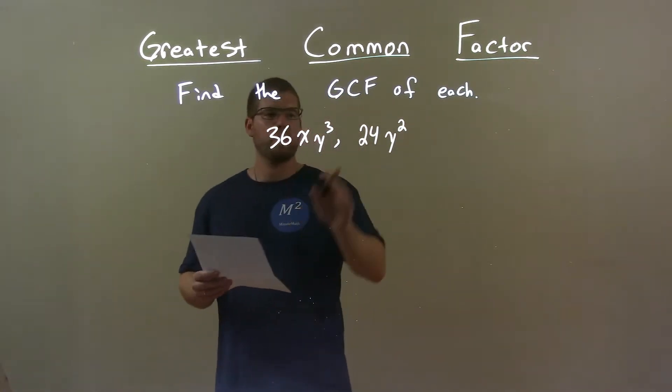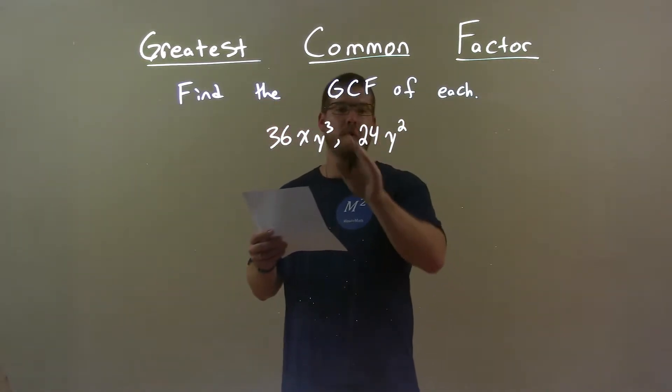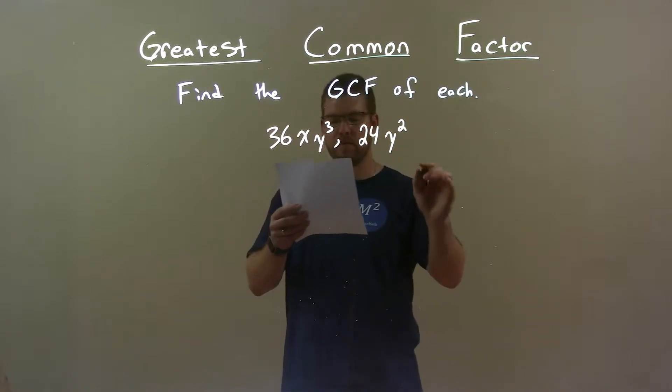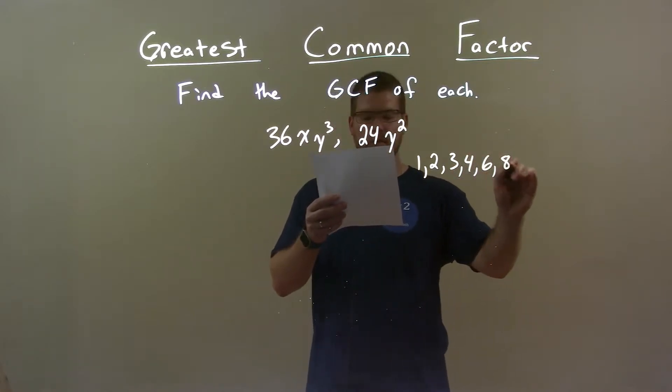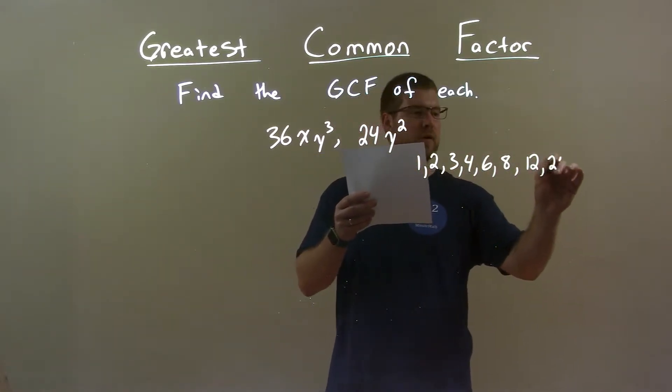Well, first let's look at the numbers and find the factors of 24. It's the smallest of these two numbers. The factors of 24 are 1, 2, 3, 4, 6, 8, 12, and 24.